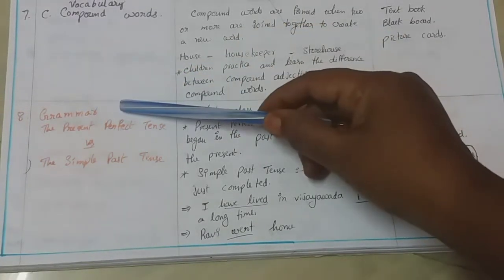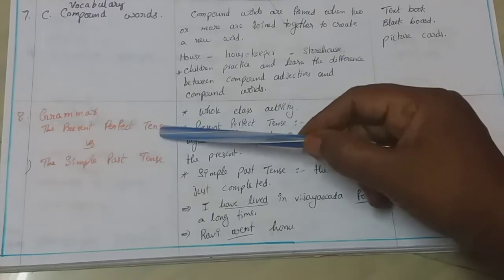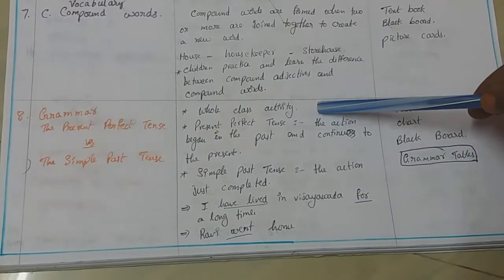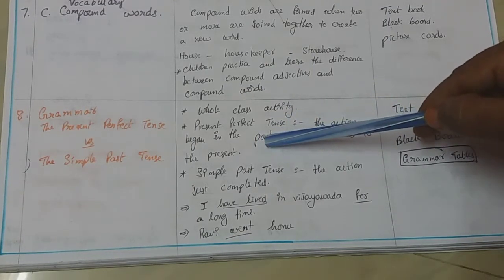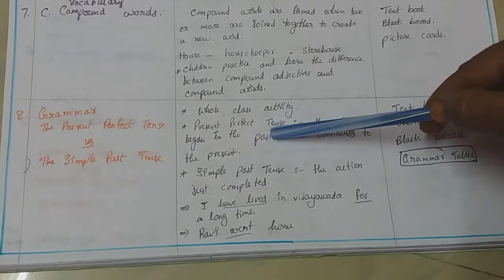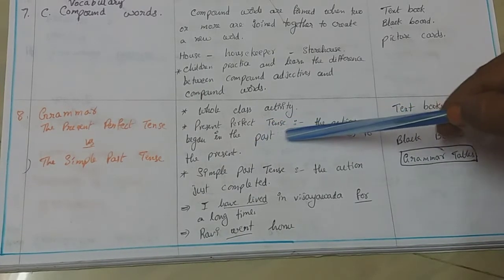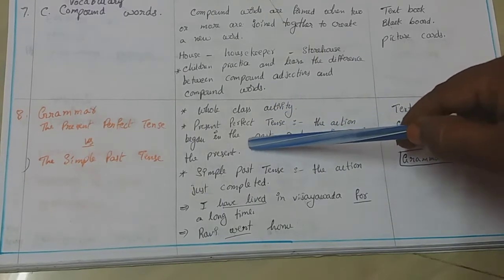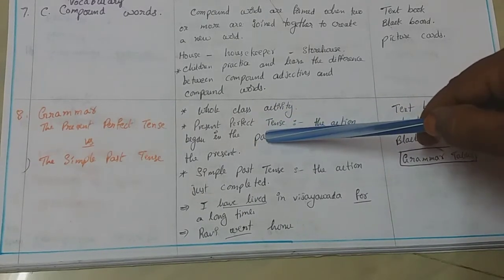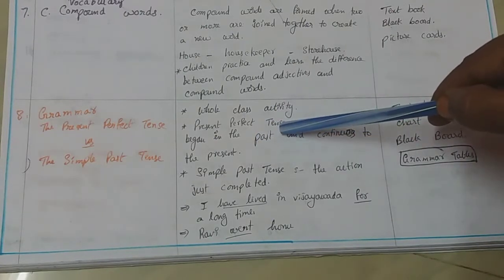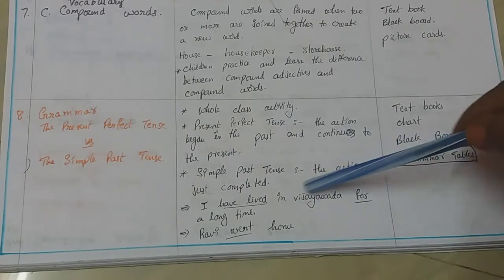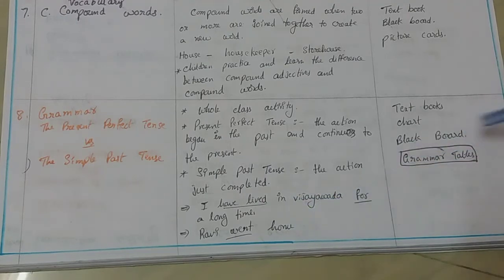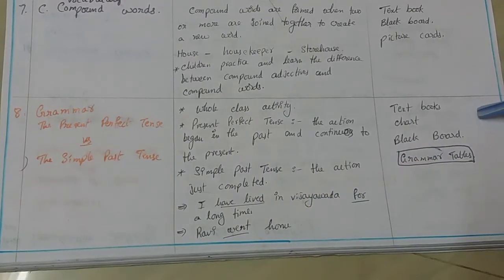In the 8th period, we teach grammar: present perfect tense versus simple past tense. It is a whole class activity. The present perfect tense describes an action that began in the past and continues to the present. We explain the tenses completely, all definitions and usage, and give examples. Simple past tense describes an action just completed — for example, 'I have lived in Vijayawada for a long time' versus 'Ravi went home.' TLM: textbook, charts, blackboard and grammar tables.